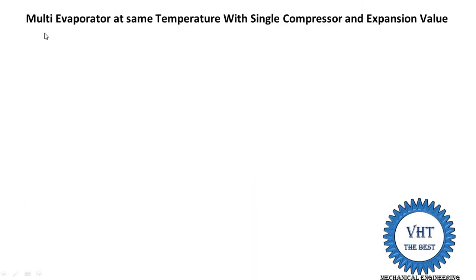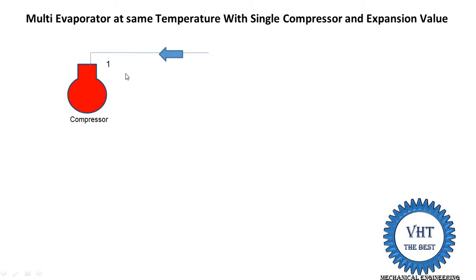First we draw the process for the multi evaporator at same temperature with single compressor and expansion valve, starting from the compressor. In the compressor, process 1 to 2 takes place — that is isentropic compression. Isentropic means at constant entropy; the pressure and temperature of the refrigerant increase.